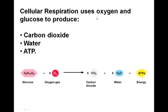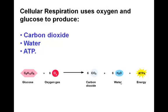Cellular respiration — and this is the key reaction to remember because you will see it on your exam — uses oxygen and glucose, a carbohydrate sugar molecule, to produce carbon dioxide, water, and the energy molecule ATP. You should be able to recite and write down: glucose plus oxygen yields carbon dioxide, water, and ultimately ATP.